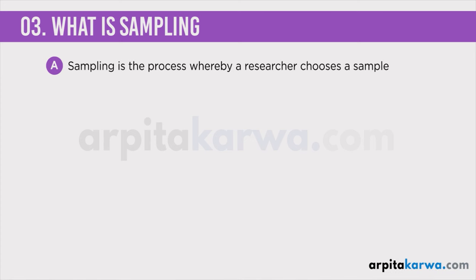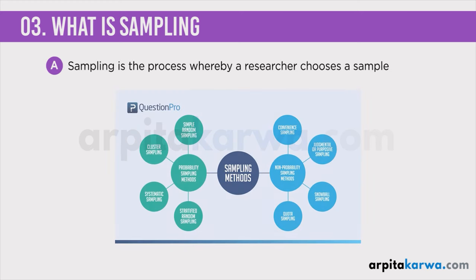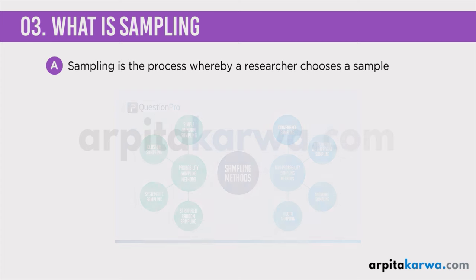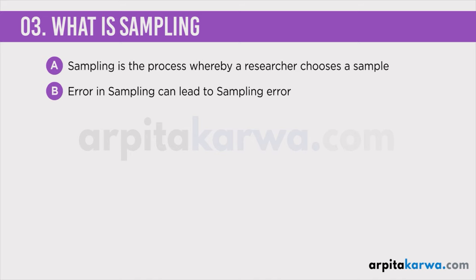We are going to talk about sampling in detail in the next few lectures. But in short, there are two kinds of sampling: probability sampling and non-probability sampling. There are various types of probability and non-probability sampling which we will look at in later videos. In this video, we are just going to understand what sampling is. Sampling is a process whereby a researcher chooses a sample, and if there is any mistake in this process, it is going to lead to sampling error.